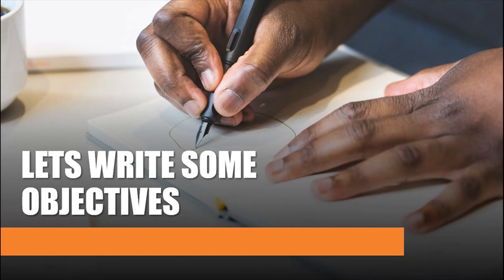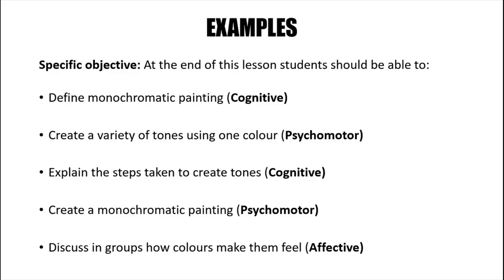Now that we understand the components — depth of knowledge, Bloom's Taxonomy, the different levels at which students think, and the verbs used to write objectives — let's write them. The right mix of objectives helps to create the perfect lesson. You do not want a lesson with too much higher order or too much lower order thinking — you want a mixture, taking into consideration the time it will take to execute these objectives. It is very important to identify the domains when writing your lesson plans.